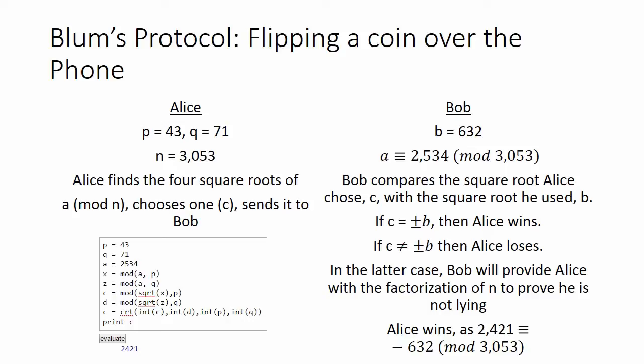Bob finds a random b between 1 and n. He chooses 632.